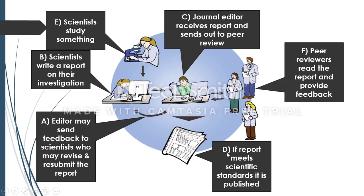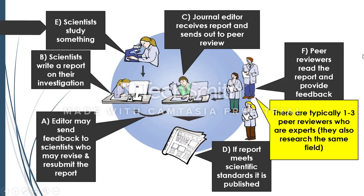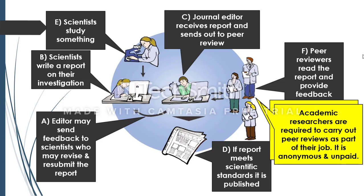If the feedback is positive and the report meets scientific standards, D — the editor will agree to publish it in the journal. Regarding the reviewers: there will usually be one to three people conducting the peer review, chosen because they are experts who also research the same field. Academic researchers are required to carry out peer reviews as part of their job. The reviewers are anonymous — you don't find out who reviewed your work — and it is unpaid.